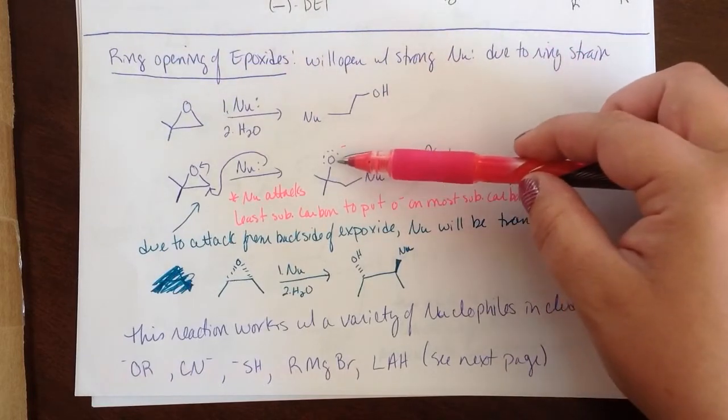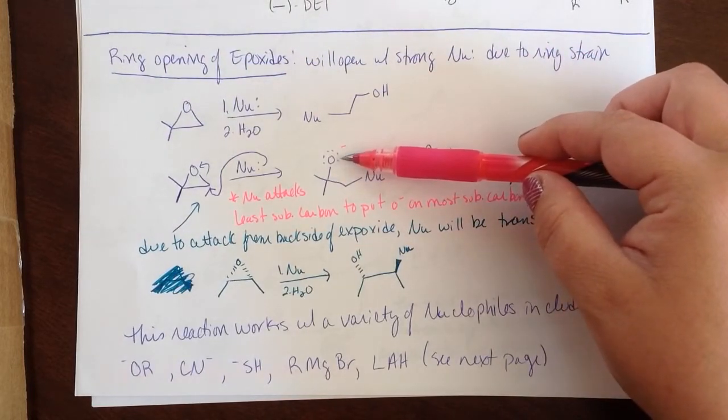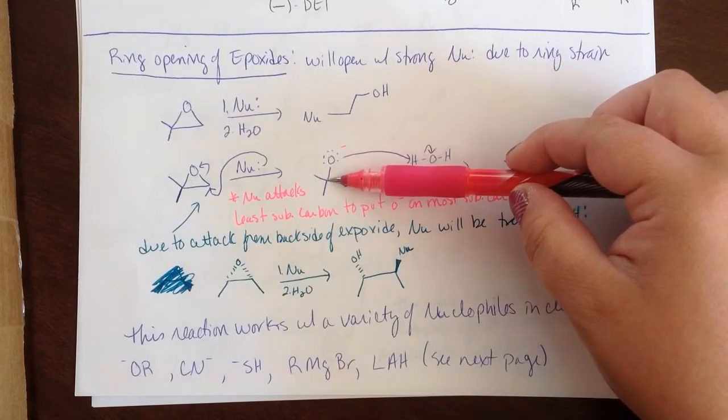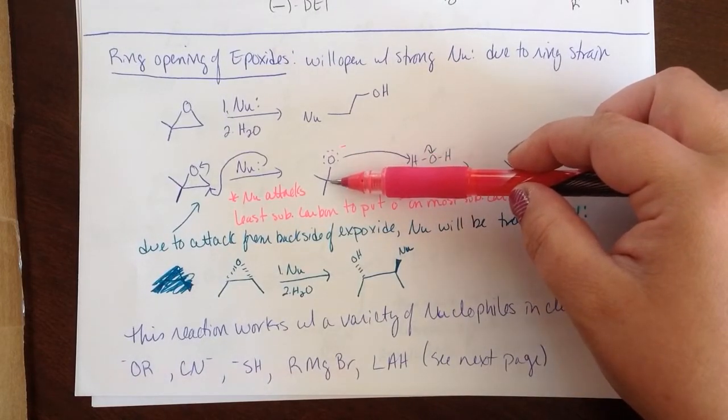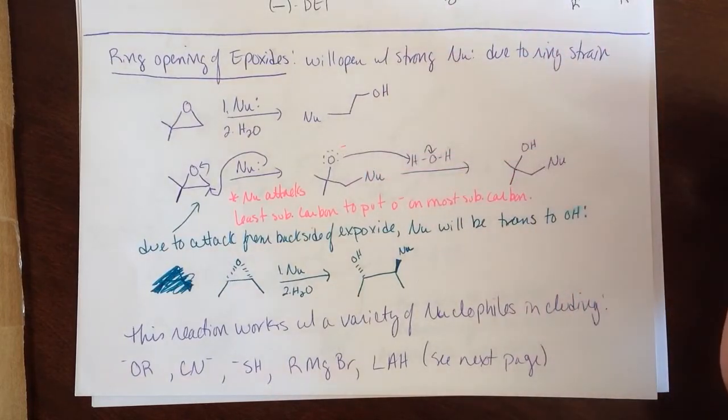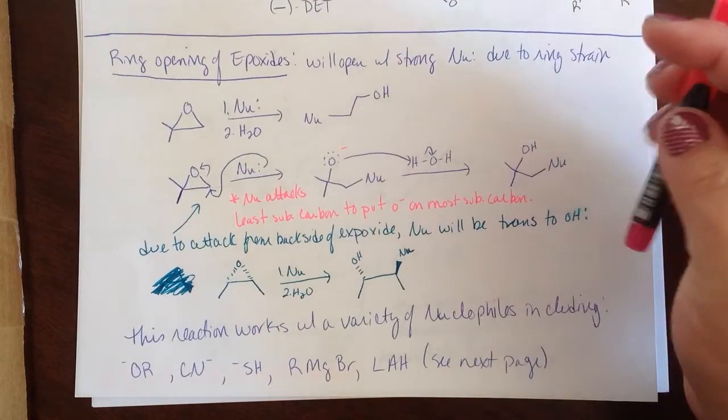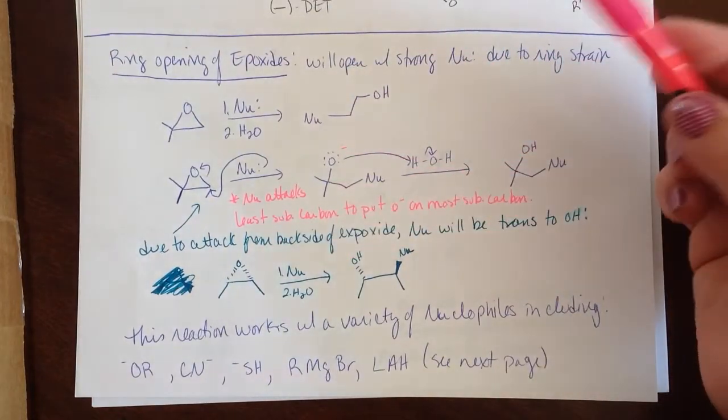The reason for that is because it's got a negative charge to it. It wants to go to the carbon that is going to support that negative charge most. In other words, you have the most substituents to support that negative charge.